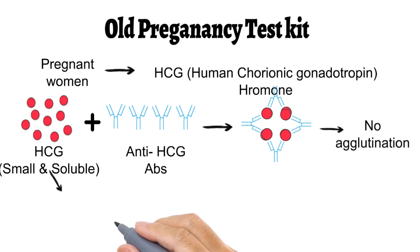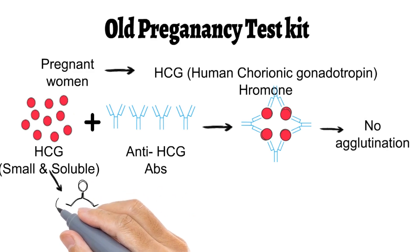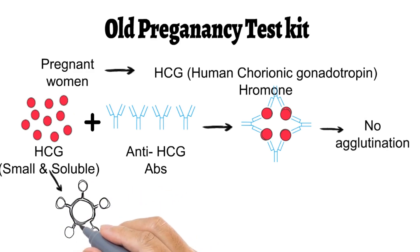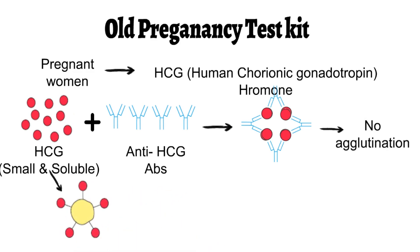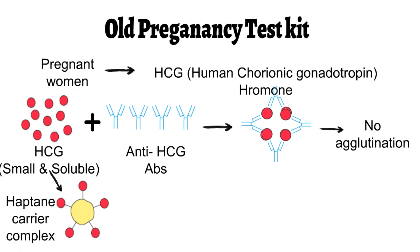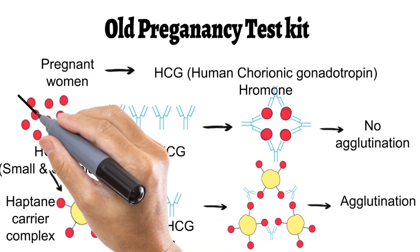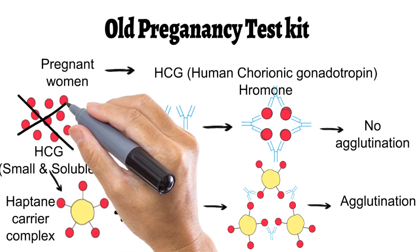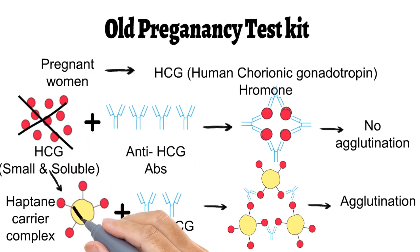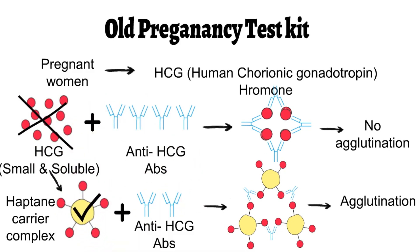But when HCG is conjugated with a carrier molecule, forming what is called a hapten-carrier complex, it is now able to show agglutination reaction with its specific antibodies. So keep this in mind: HCG alone cannot show agglutination, but its complex with a carrier can show agglutination reaction.